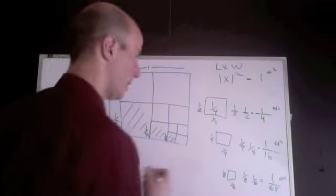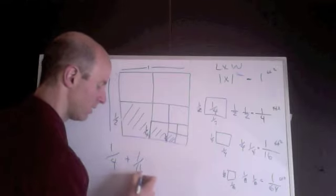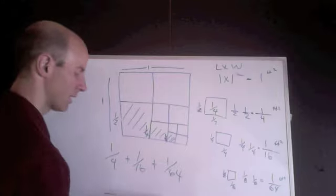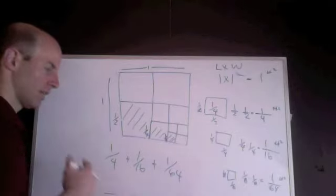So, I think I can do it right here. I'm going to add 1 fourth plus 1 sixteenth plus 1 sixty-fourth. And I do that by finding the common denominator, the number that is shared, is a multiple.